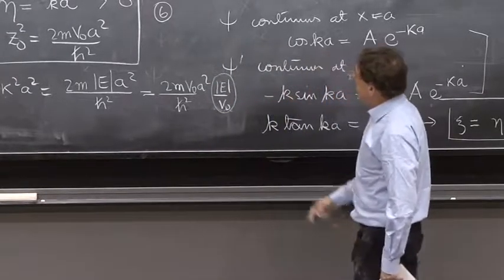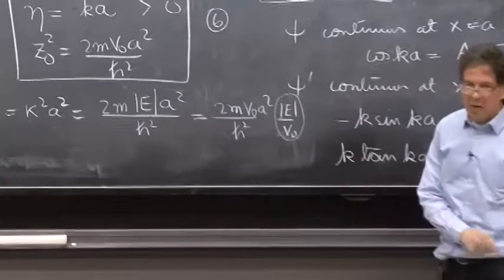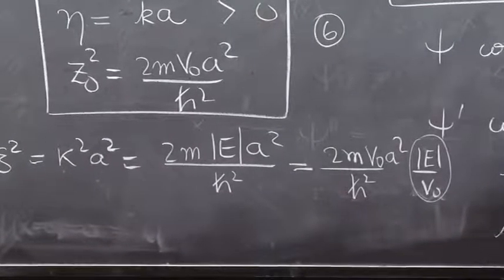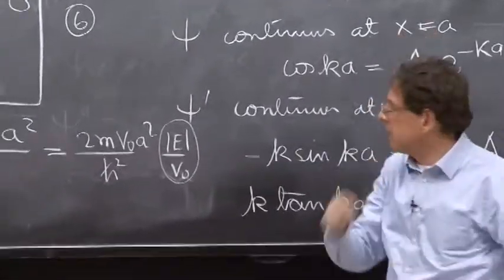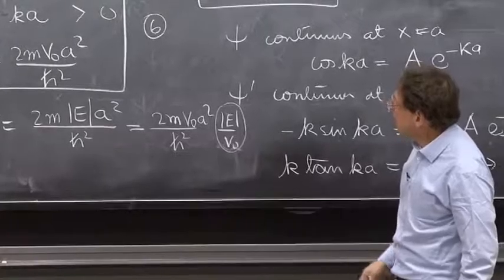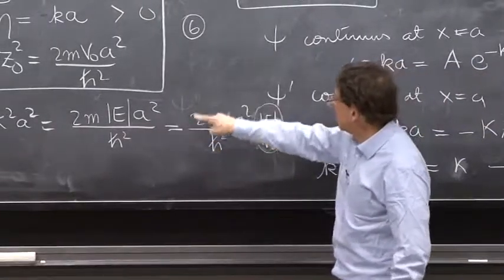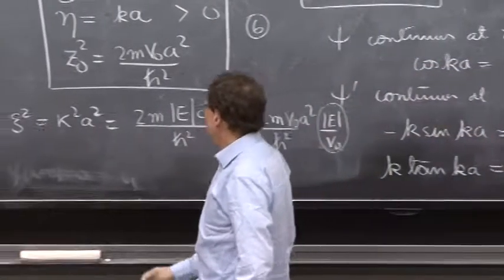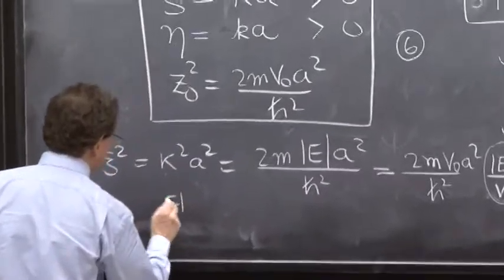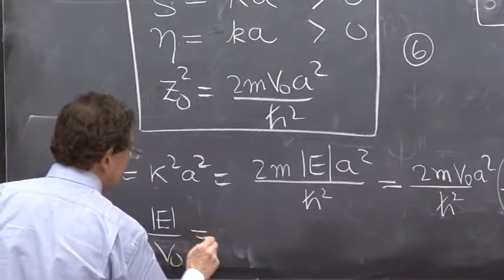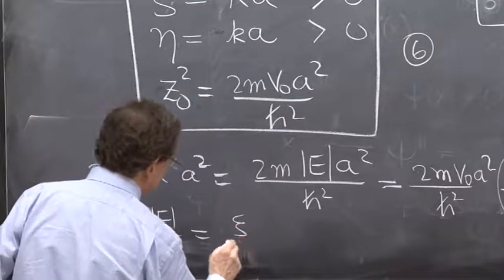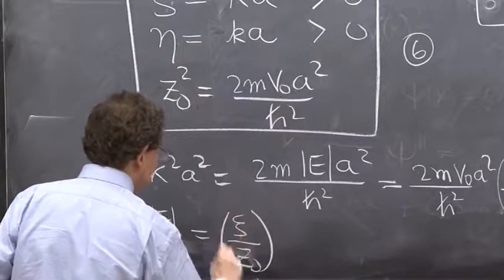Absolute value of e over v₀. After all, you probably prefer to know e over v₀, which tells you how proportional the energy is to the depth of the potential. And this is your famous constant, z₀. So e over v₀ is actually equal to ψ over z₀ squared.